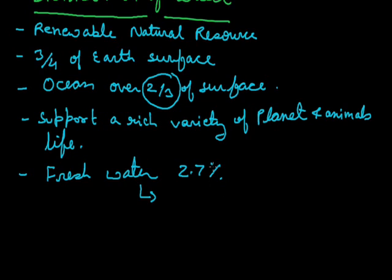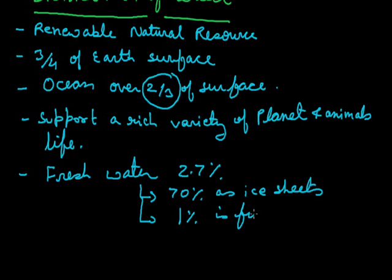Among this fresh water, 70% of the total fresh water is in the form of ice sheets in the North Pole, South Pole, and in glaciers. And only 1%, or we can say less than 1%, of the total water available on Earth is fit for use.